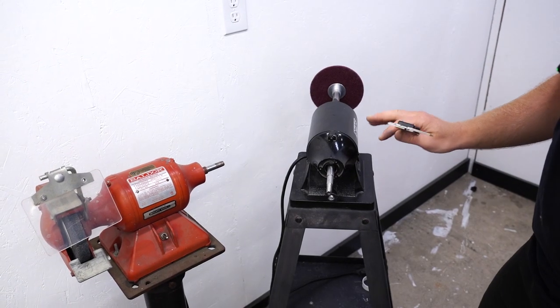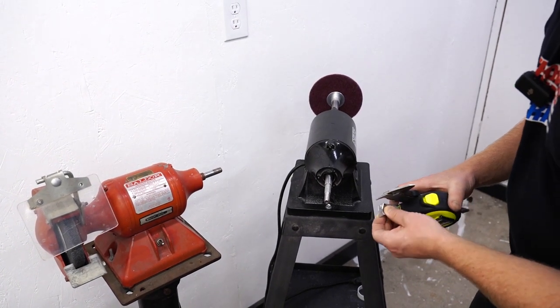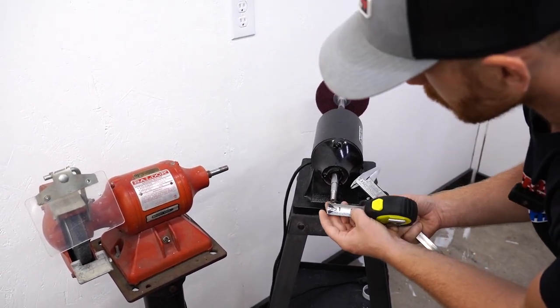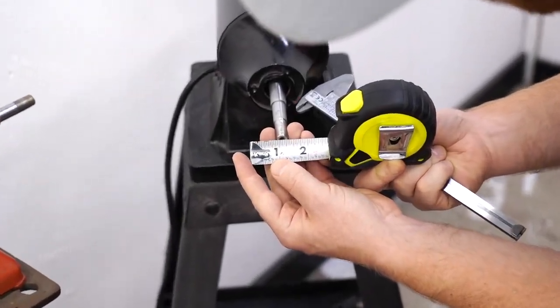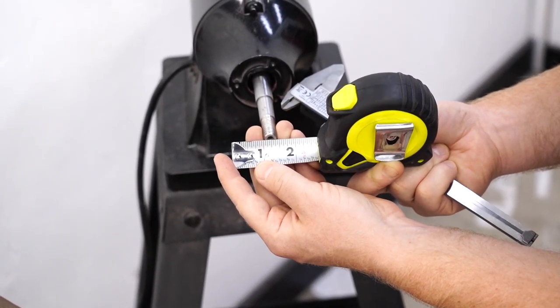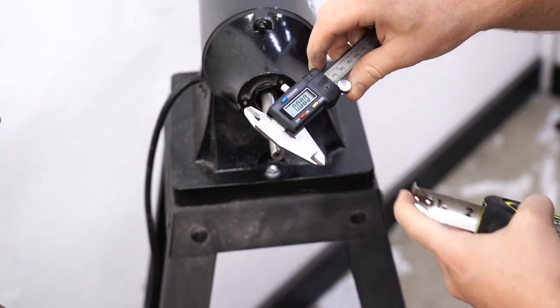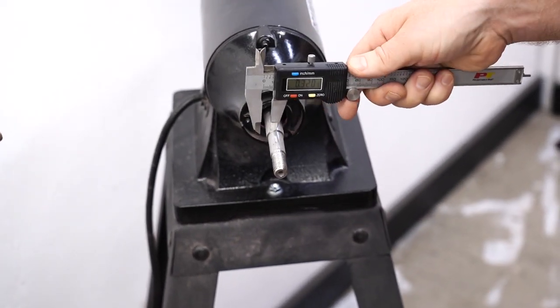Now before you buy an extender, you want to measure the diameter of your machine shaft. Take a tape measure. You can see this one is right about half inch. More accurate way to do it is with a set of calipers here. Yep, half inch.